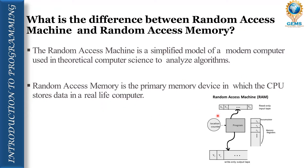The difference between random access machine and random access memory: Random access memory (RAM) is a temporary, volatile, primary memory in which the CPU stores data in a real computer, but data is not stored permanently. Random access machine is a simplified model of a modern computer used in theoretical computer science to analyze algorithms — specifically for analyzing time or space complexity. By this model, we can determine whether our algorithm is effective or not.